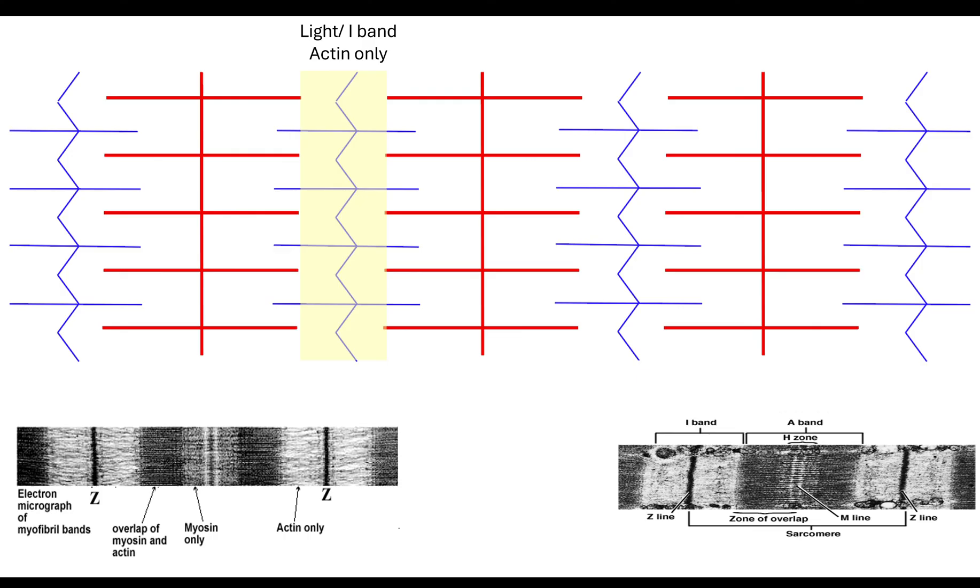Because it's only got the thin filament, it appears light in an electron micrograph. If we then look at the myosin region, that thick filament, that's known as the dark or A band.